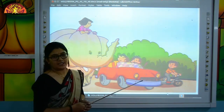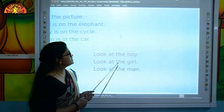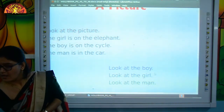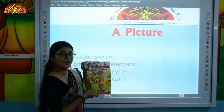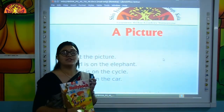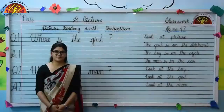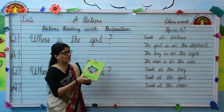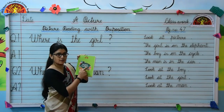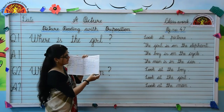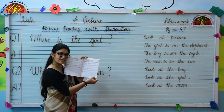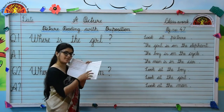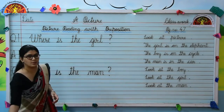So kids, do reading practice of page number 47 from your Hollyhoek book. And now we will do the question answers. Take out your English workbook and open page number 87. And mention the date and classwork at the top. Now read question number 1.